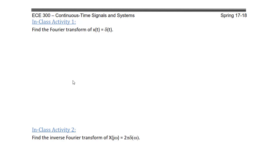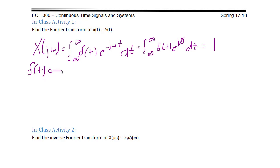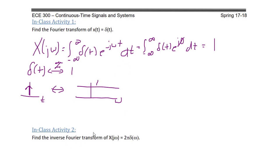In-class activity one: find the Fourier transform of x(t) equals δ(t). Using the formula, X(jω) equals the integral from minus infinity to infinity of δ(t) e^(−jωt) dt. By the sifting property, this becomes the integral of δ(t) e^(j·0) dt, which is just the integral of the impulse. The area under an impulse is one, so the Fourier transform of δ(t) is 1. In the time domain we show the impulse, and in the frequency domain we show a constant 1 — meaning the impulse has all frequency components.